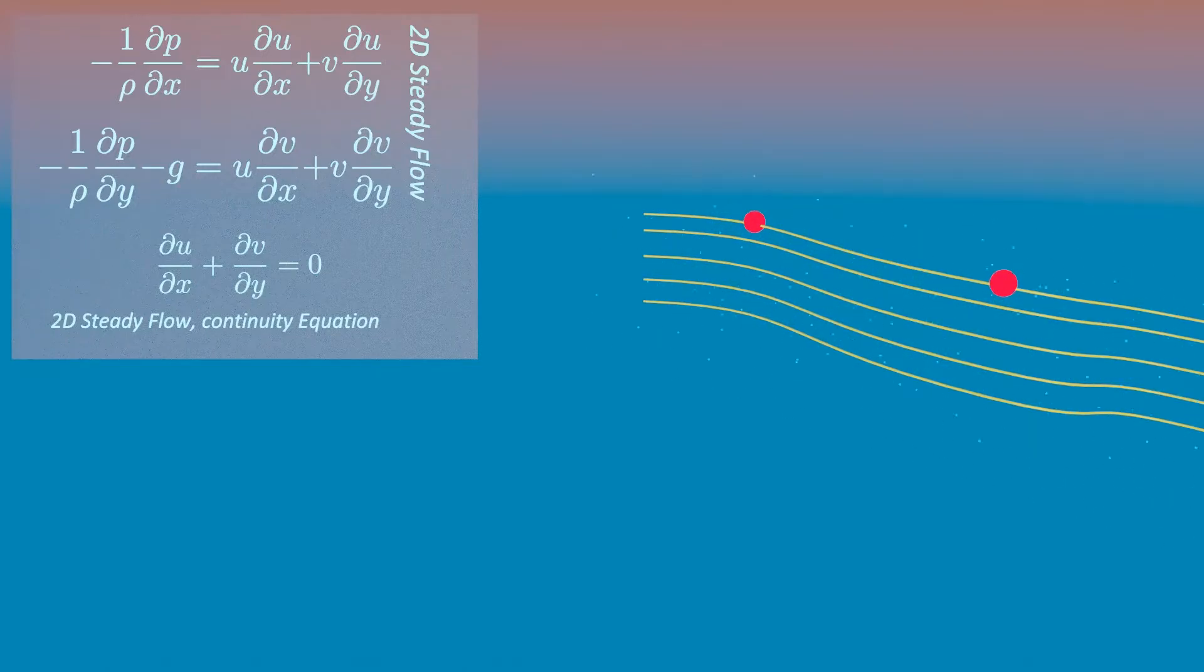But if a condition of irrotational flow exists, meaning angular velocity equals zero, then the Bernoulli equation can also be applied between any two points that are on different streamlines.